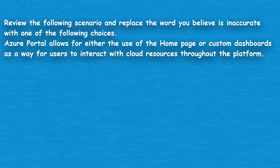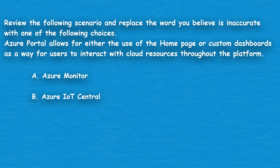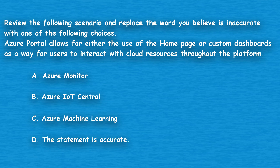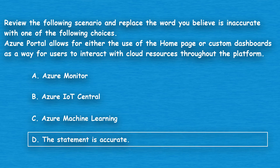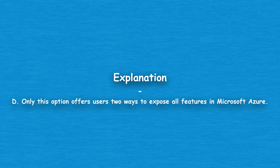The next question: review the following scenario and replace the word you believe is inaccurate. Azure Portal allows for either the use of the home page or custom dashboards as a way for users to interact with cloud resources throughout the platform. Option A: Azure Monitor. Option B: Azure IoT Central. Option C: Azure Machine Learning. Option D: The statement is accurate. The correct answer is Option D, the statement is accurate. Only this option offers users two ways to expose all features in Microsoft Azure.